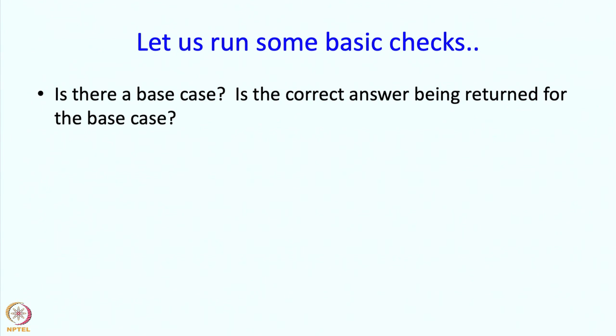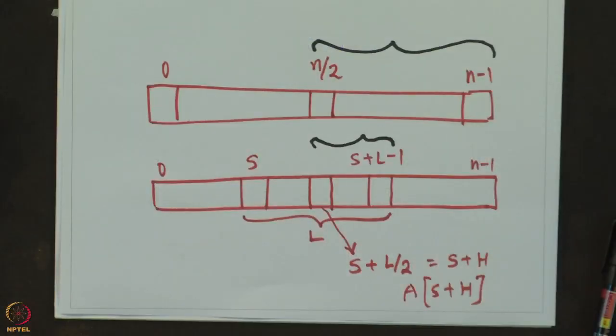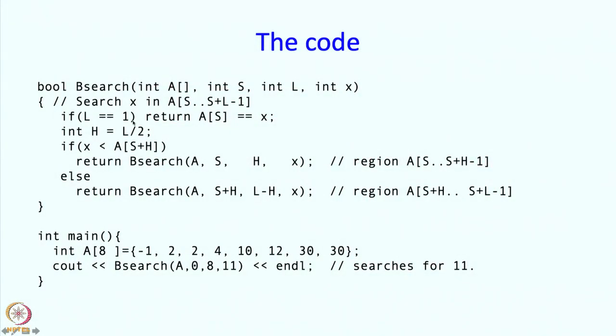This is a recursive function so we should check it has the proper format. First, is there a base case and is the correct answer returned for it? Yes — L equal to 1 is the base case, where the program returns without recursing further. If L is 1 we are searching an array of length 1 starting at S, so A[S] is the only element. We check whether that element equals x, which is indeed the correct answer.